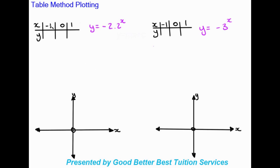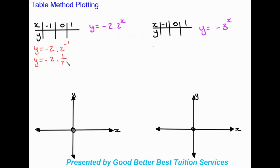We set up our table with x on top and y at the bottom, using standard values of negative 1, 0, and positive 1. Substituting x = -1 into y = -2 × 2^x: anything to a negative power turns into a fraction, so 2^(-1) = 1/2, giving y = -2 × 1/2 = -1.